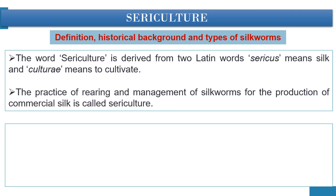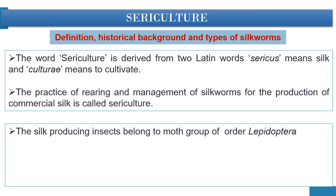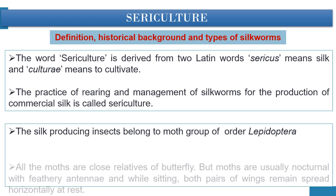Although silk is a very beautiful and fancy gift of nature, its commercial production is very complicated and a tough job which requires heavy manpower. There are four major varieties of silk — mulberry, muga, eri, and tassar — of commercial importance, obtained from different species of silkworm. Except mulberry, other varieties of silk are termed as non-mulberry. All these silk-producing insects or sericinous insects belong to the moth group of order Lepidoptera.